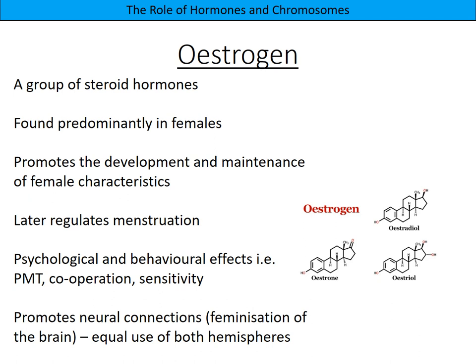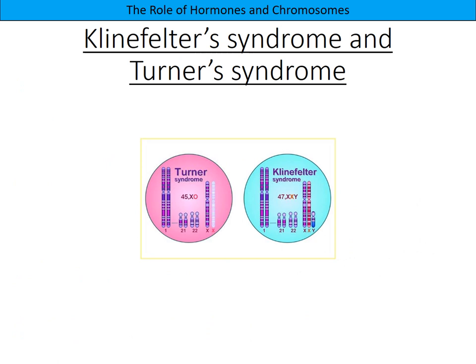Females are seen as more cooperative and more sensitive to others' needs than males, which is mainly due to oestrogen. Finally, oestrogen promotes neural connections and the feminisation of the brain - meaning equal use of both hemispheres. This contrasts with masculinisation, where one side is more dominant; equal use of both hemispheres is seen as more feminine.